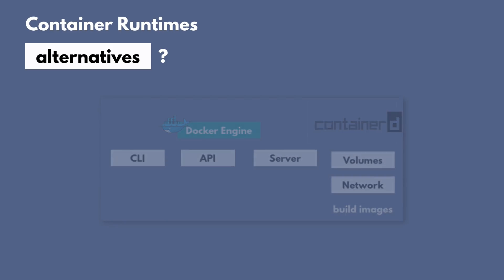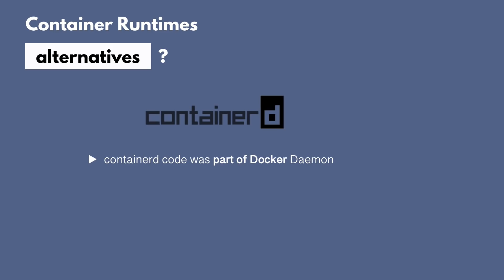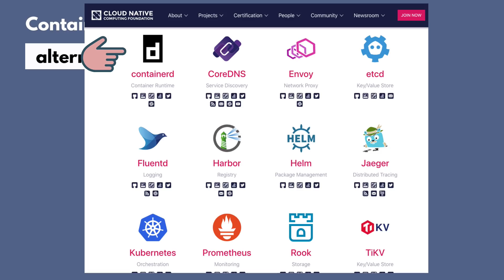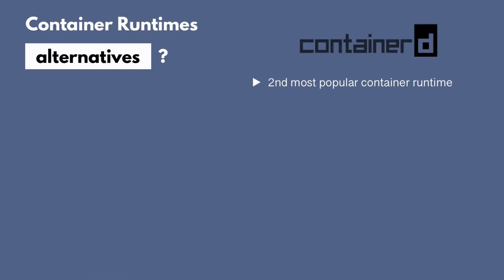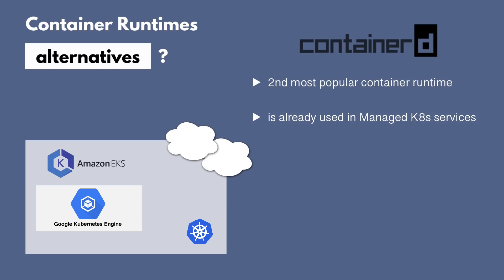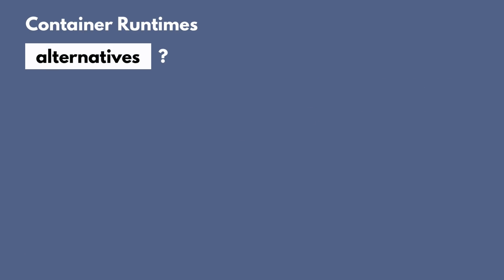The container runtime that Docker uses is containerd. The containerd component was originally part of the Docker daemon code, and Docker extracted it as a separate component so that it can be deployed as a standalone container runtime and used in Kubernetes clusters. Containerd is now part of CNCF and is being developed and maintained as a separate project. It is the second most popular alternative to using Docker as a runtime, and is already being used by major cloud platforms — for example, AWS EKS and Google Cloud's Kubernetes service — making it a mature and popular container runtime.